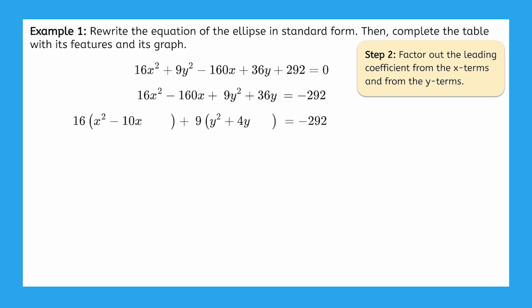Notice that we're leaving a space in each pair of parentheses for the constants we'll add to complete the squares, which is our third step. Let's complete the square first for x, focusing only on this first quadratic expression in parentheses. Since half of negative 10 is negative 5 and negative 5 squared is 25, adding 25 will complete the square.